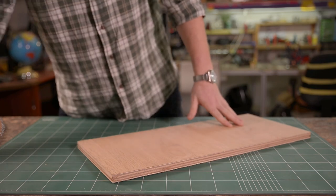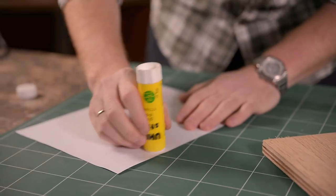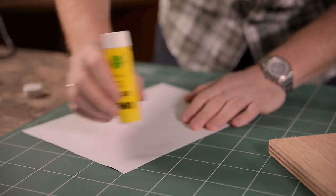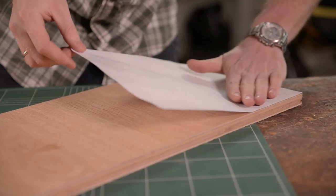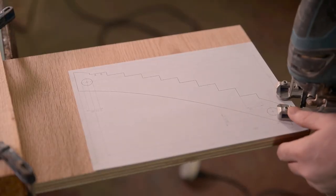The base and the pendulum holder are made of some scraps of oak veneered plywood. I started by gluing the template using a generous amount of glue stick. We don't want the template to peel off before we're done cutting.